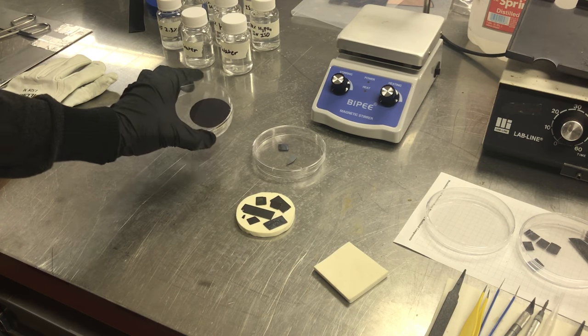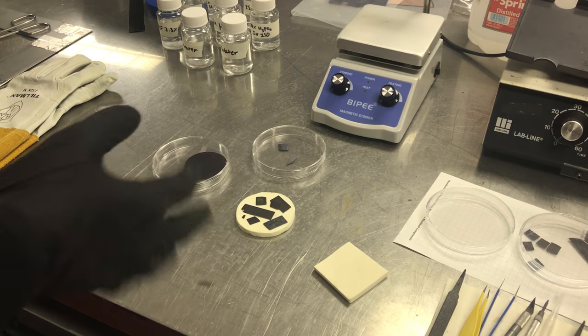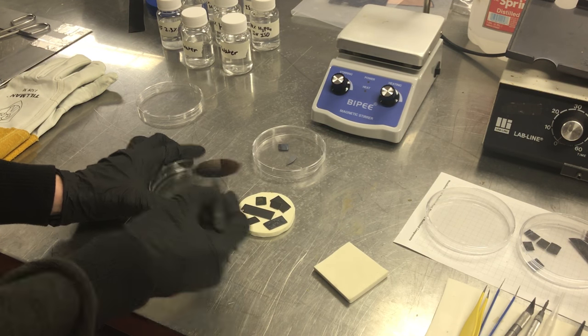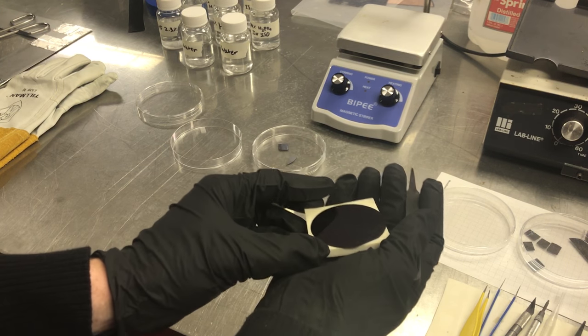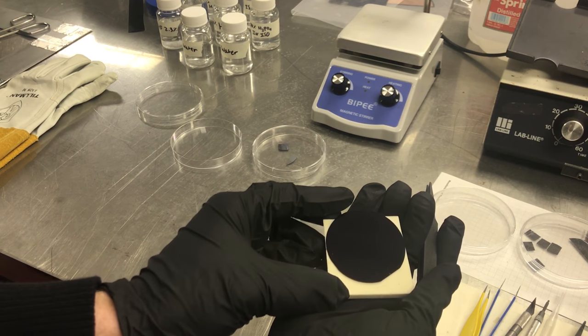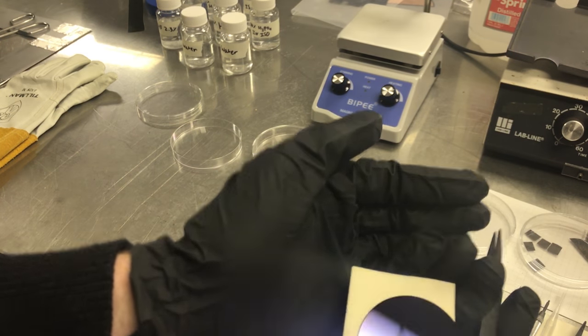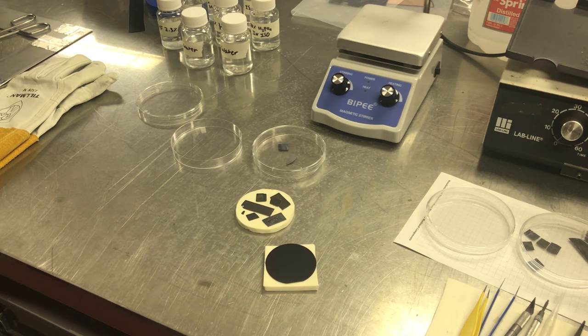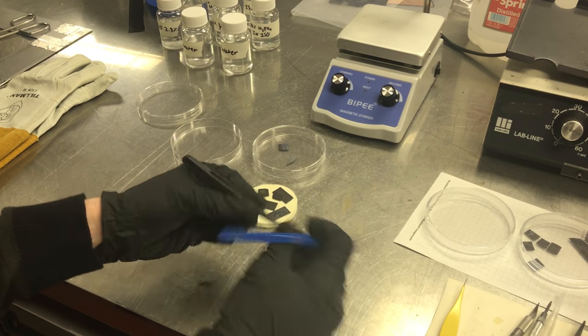Now, I'm going to cleave this up into some smaller pieces, and then we'll be able to do some masking and etching, and fit them into the 1-inch tube diffusion furnace. I'm going to use a pair of stainless steel tweezers to cleave the wafer, and this plastic one, just to hold it down.